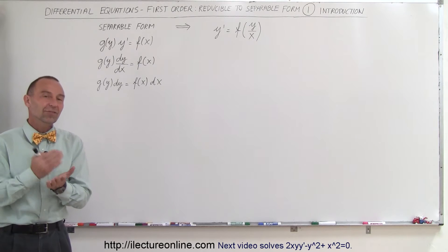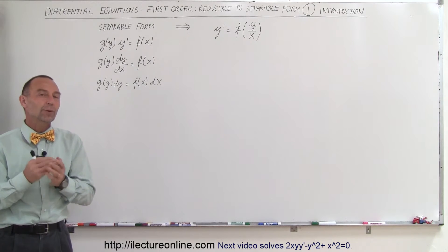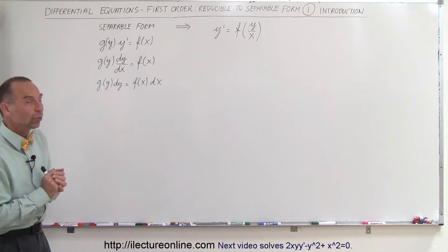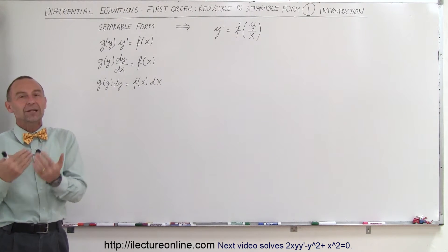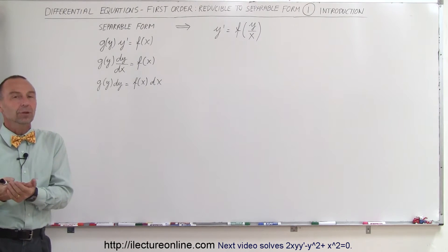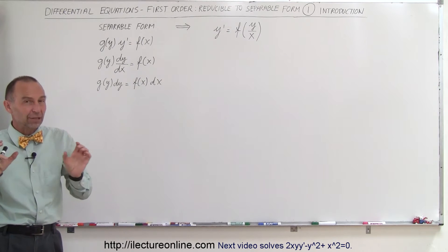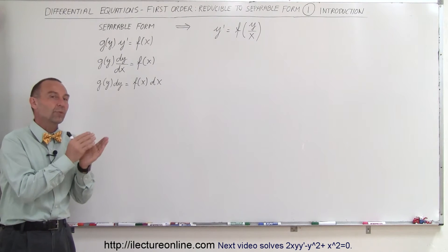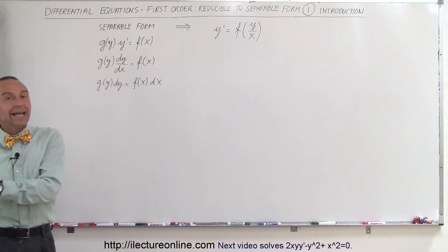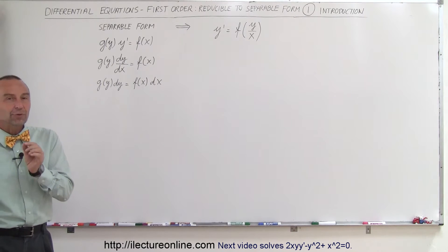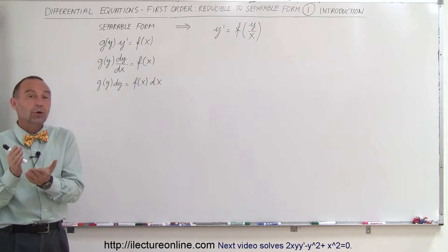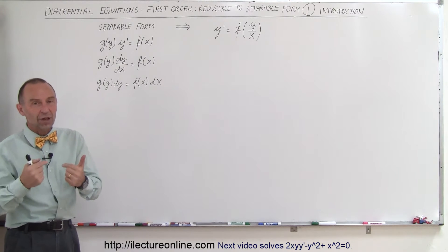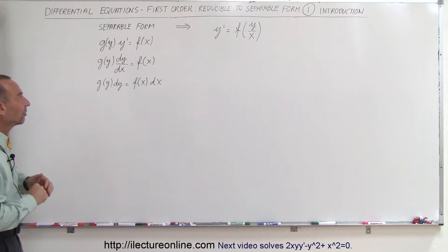Welcome to ElectronLine. In this series of videos we're going to learn how to solve first-order differential equations which at first sight don't appear to be separable — where we don't seem to be able to separate the variables so that we have the y variables along with dy and the x variables along with dx — but if we do a simple substitution we're going to be able to make them separable and solve them just like we did in the previous series.